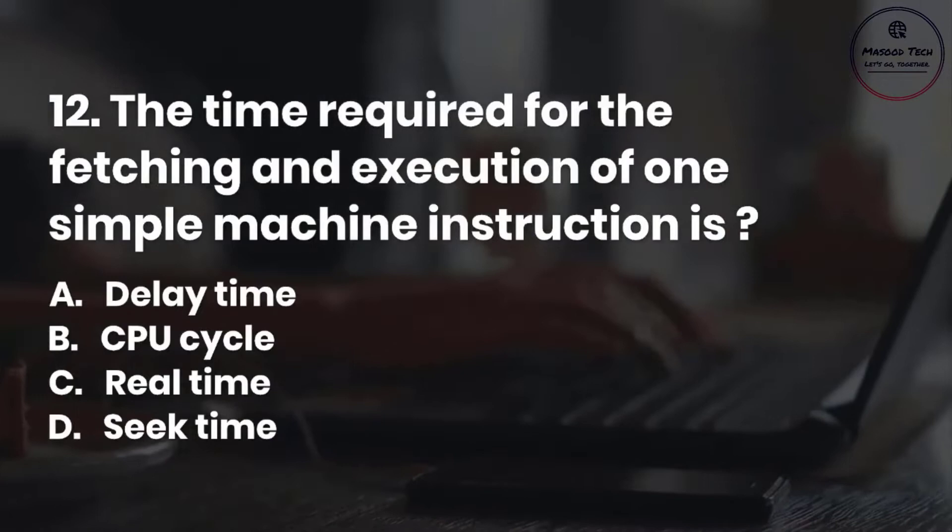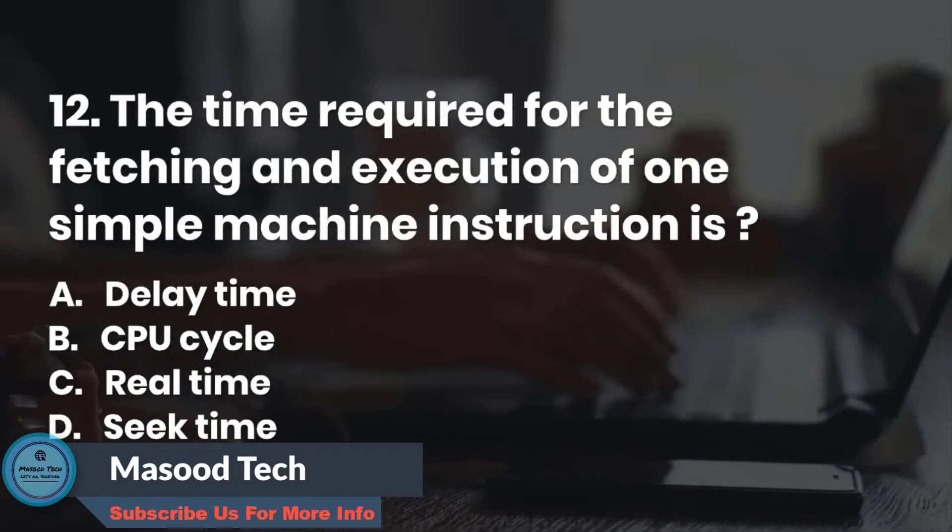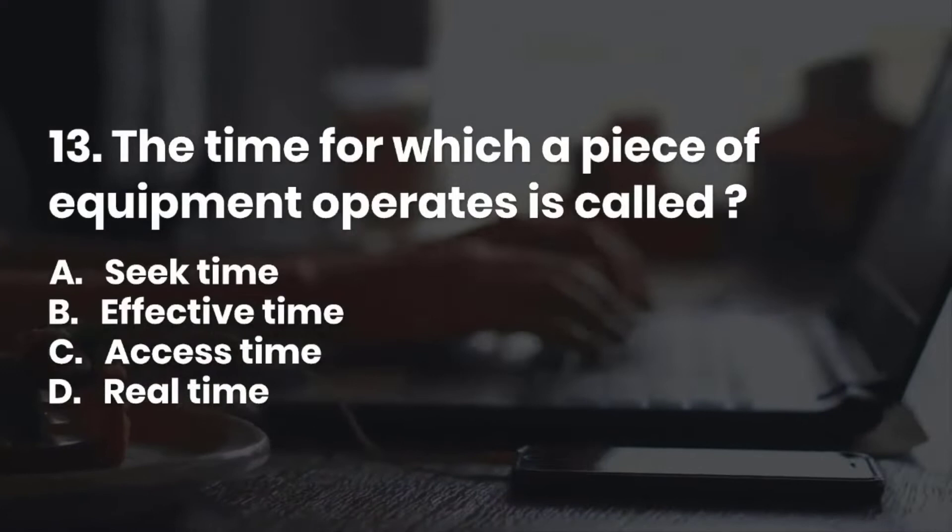Number 13. The time for which a piece of equipment operates is called: A. Seek time. B. Effective time. C. Access time. D. Real time. Correct answer is B.